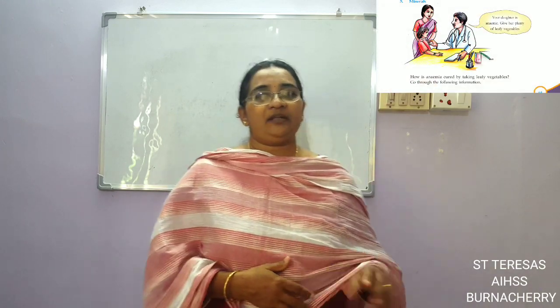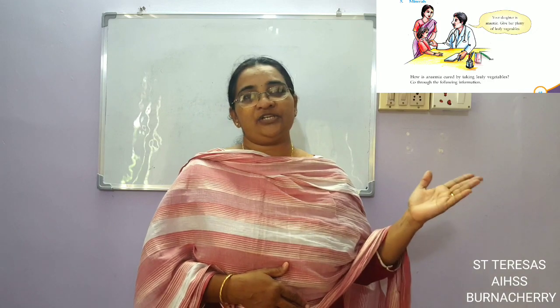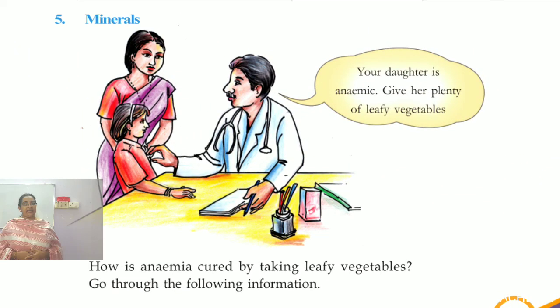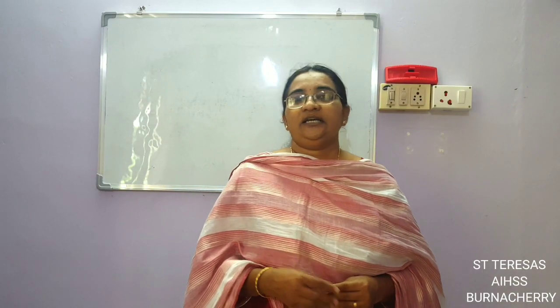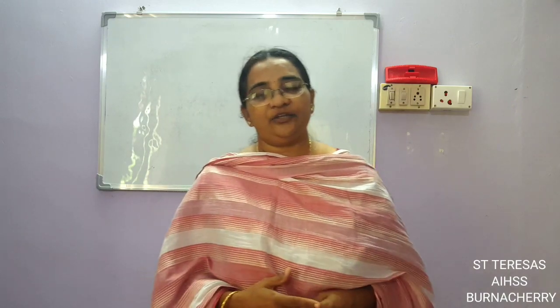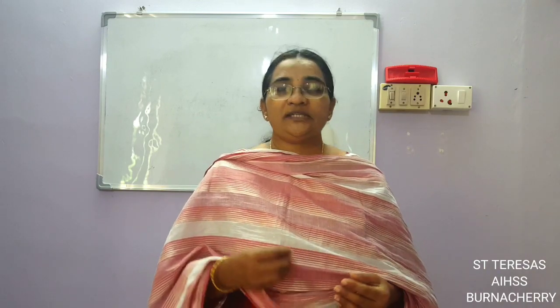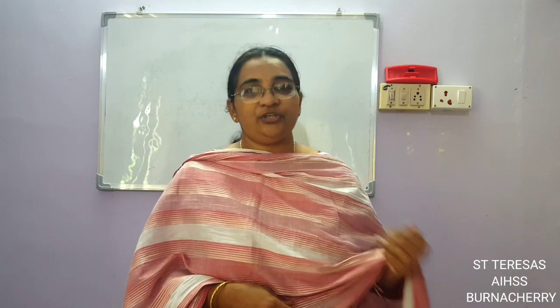Below that, we have another illustration where a doctor is looking at a child and telling the parent: your daughter is anemic — give her a lot of leafy vegetables. What is the meaning of anemic? Sometimes when you go to the doctor, the doctor looks at your hands and fingers and tells you that you are anemic. Why is the doctor asking the child to take lots of leafy vegetables? That leads us to the next nutrient we are going to learn — minerals.